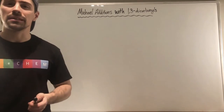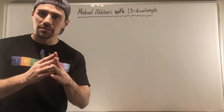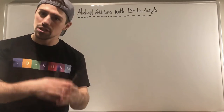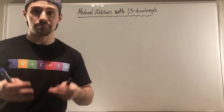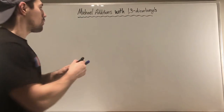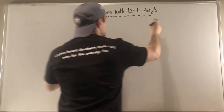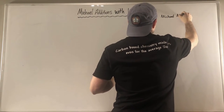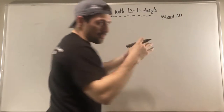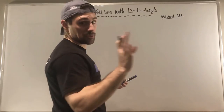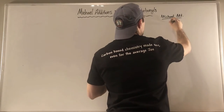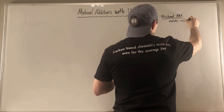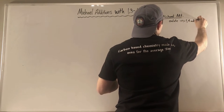I also want to correct myself from a previous video. A Michael addition is when you have some type of enolate — whether a traditional enolate or an ester enolate — and you attack in a 1,4 addition. A Michael addition is strictly, strictly an enolate doing a 1,4 addition. I was a little loose with this definition in the past with cuprates specifically.